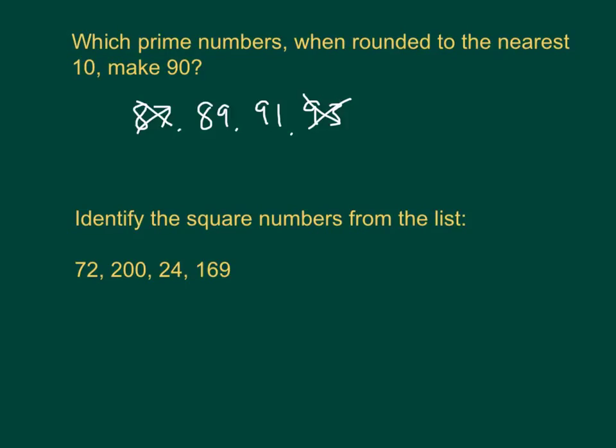Well, if I now check my 7 times table, 91 is actually a multiple of 7 because 7 times 13 is 91. That leaves 89.